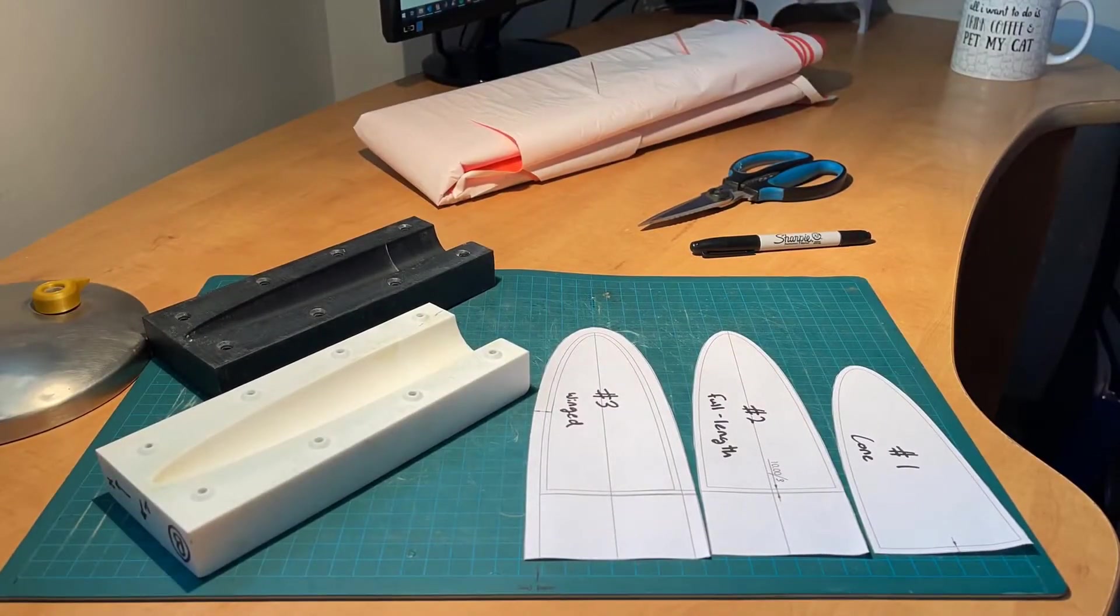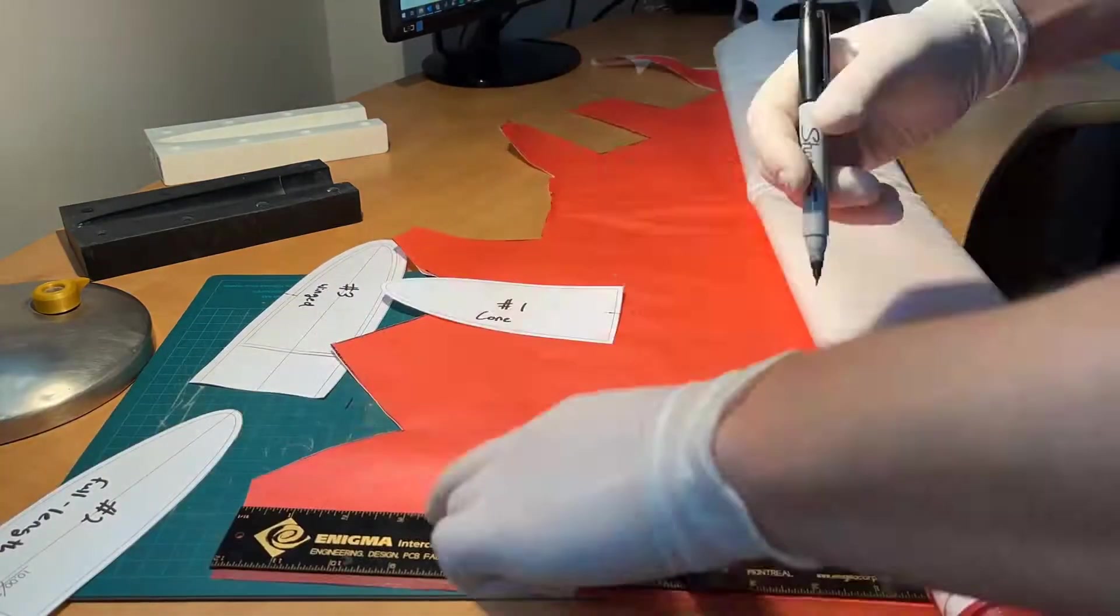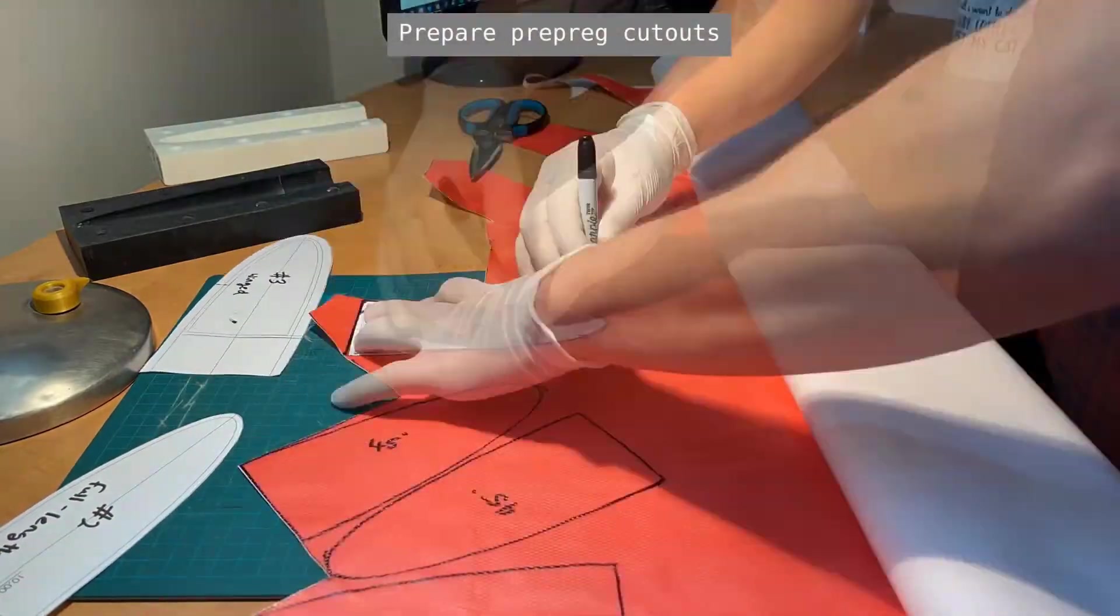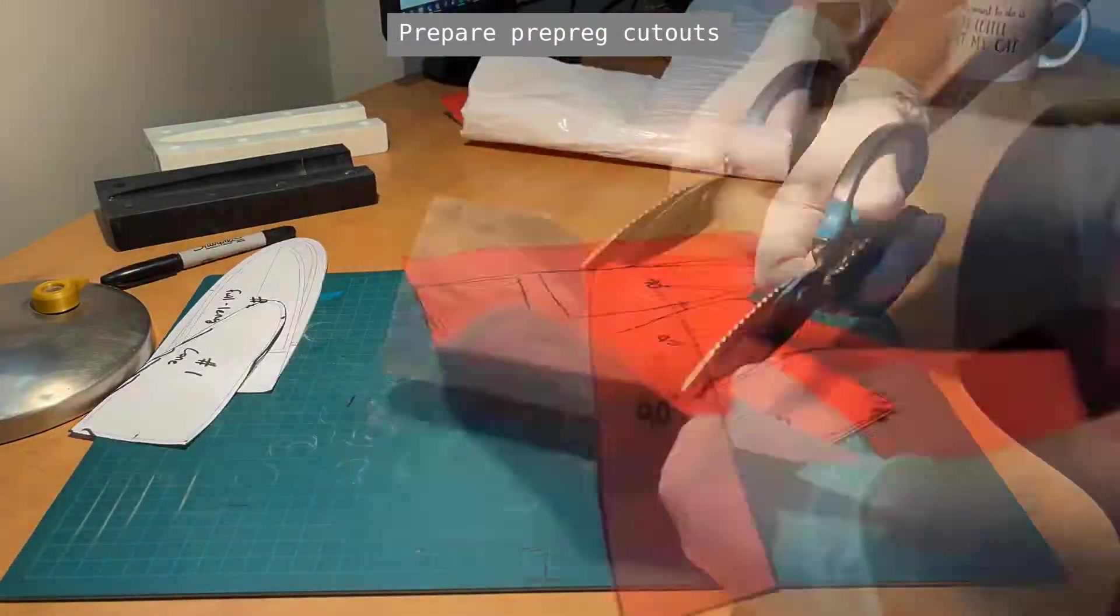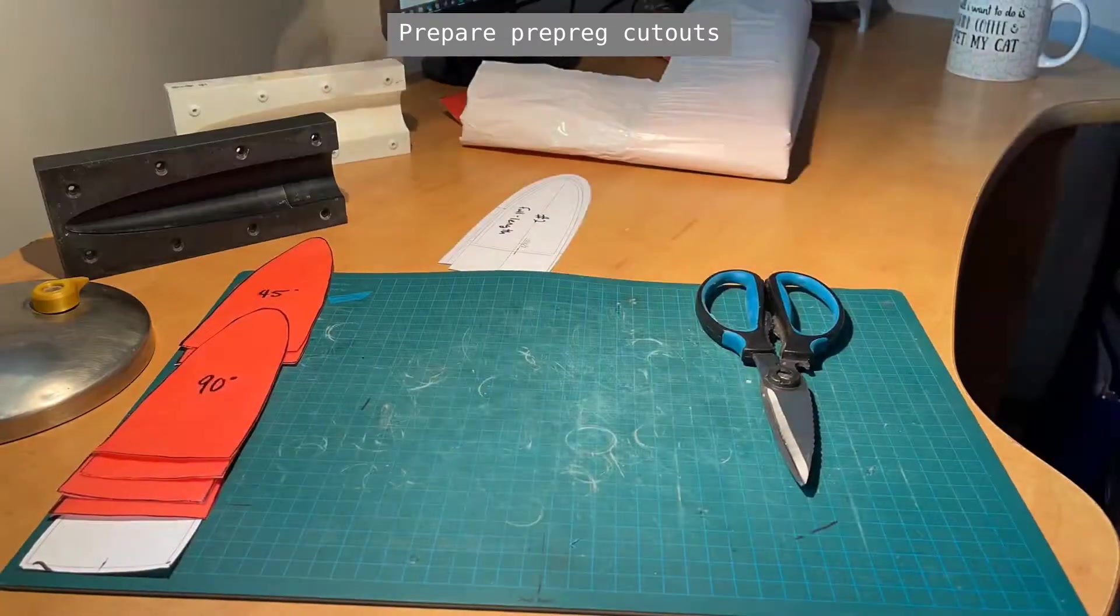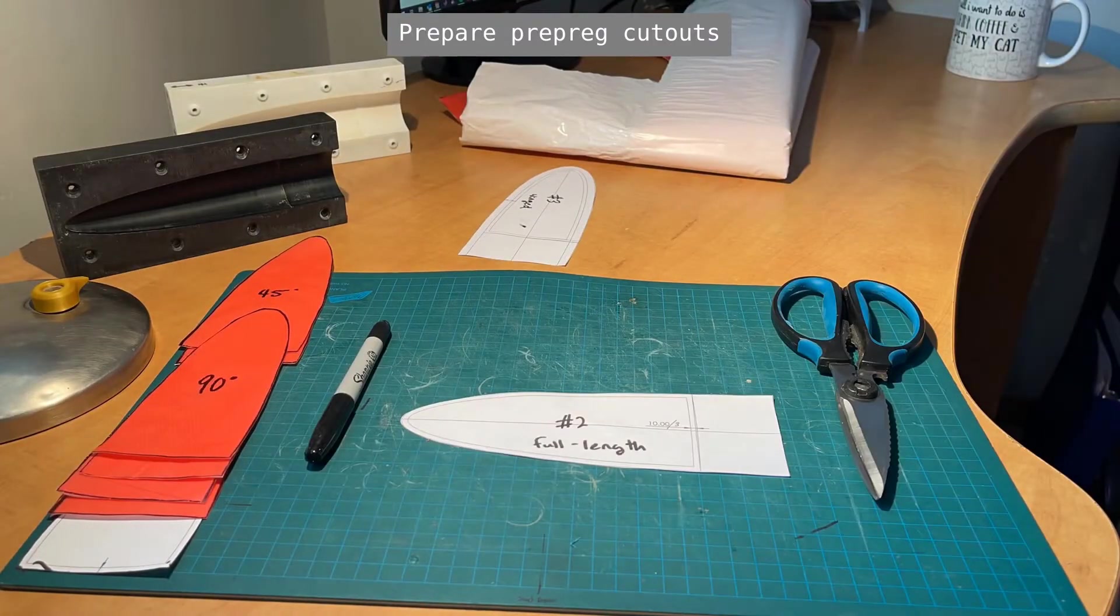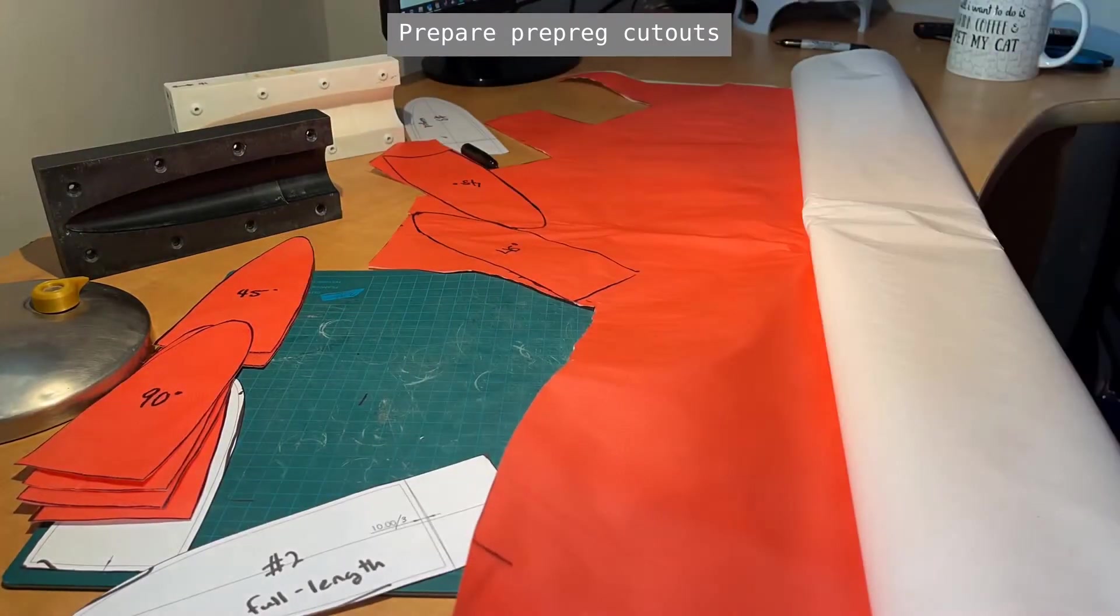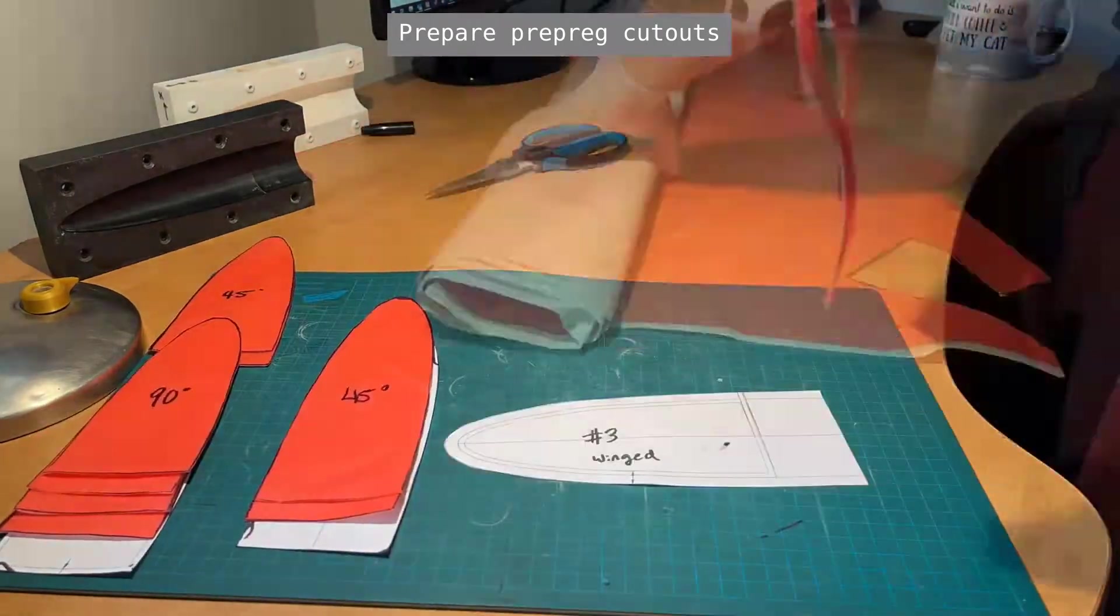Once the molds are ready, we can begin to prepare all our prepreg fiberglass cutouts using three different cutting templates: cone number one, full length number two, and winged number three. Our design will require six layers at an alternating 90 degree and 45 degree weave pattern offset to maximize the layup strength.